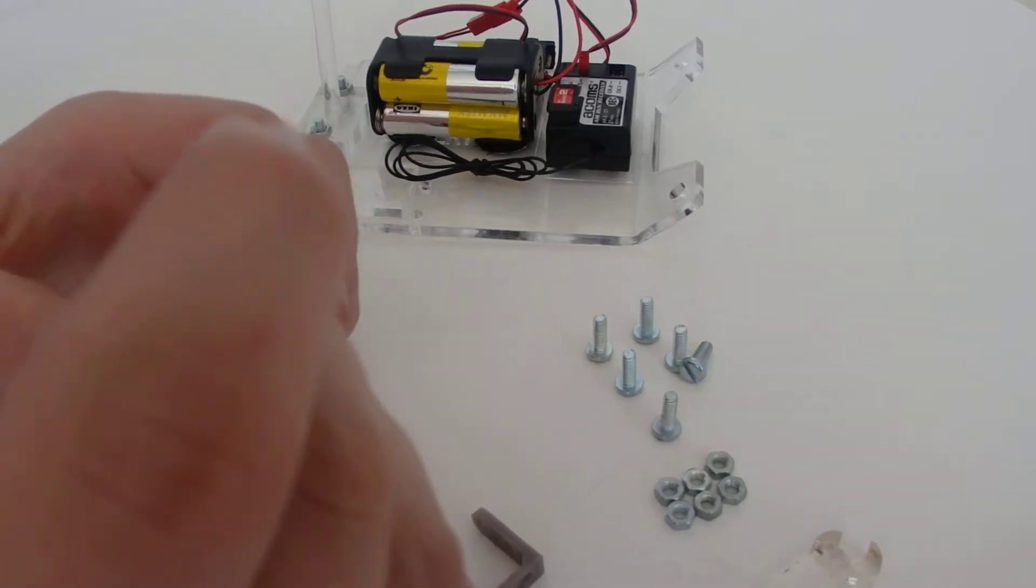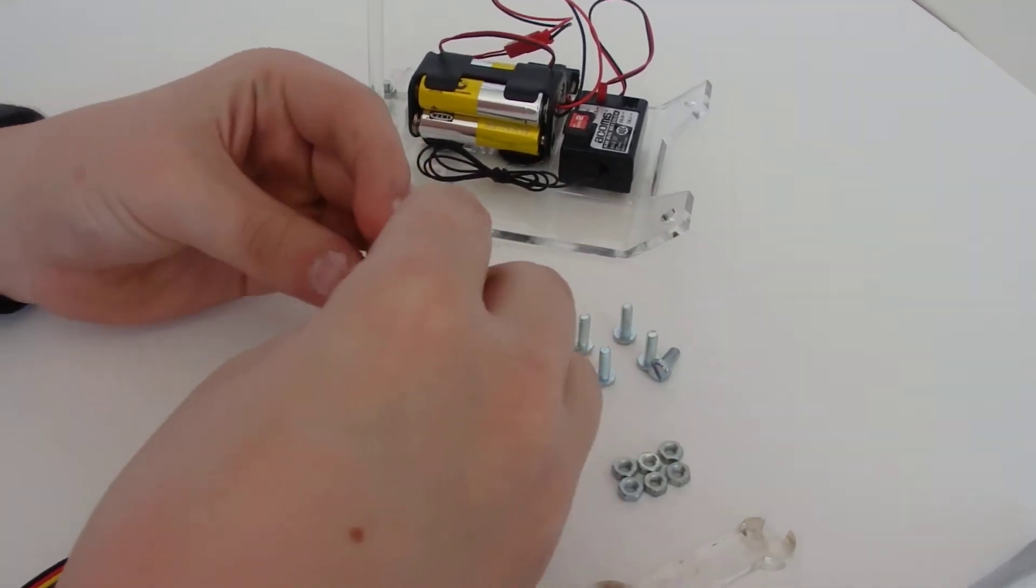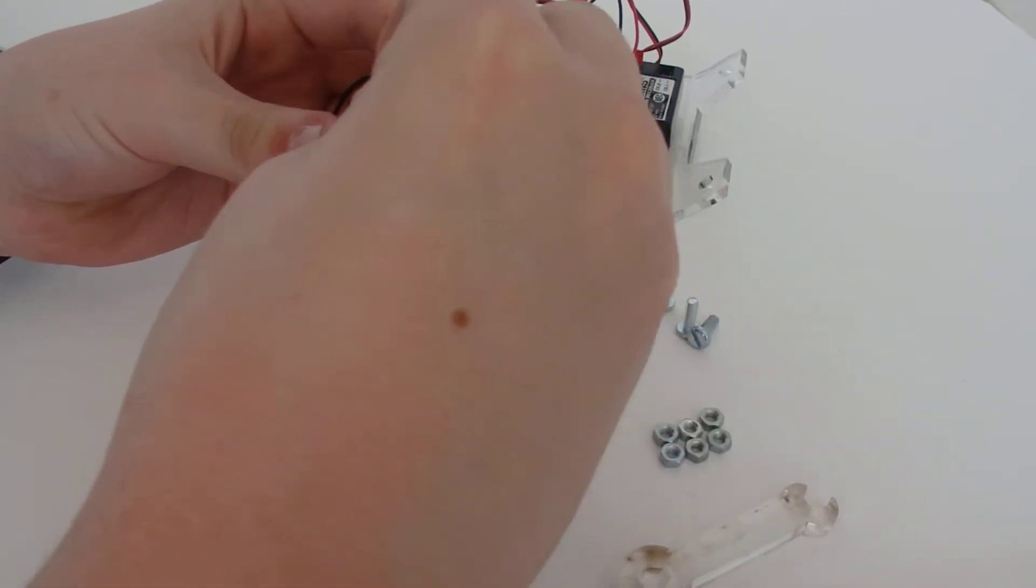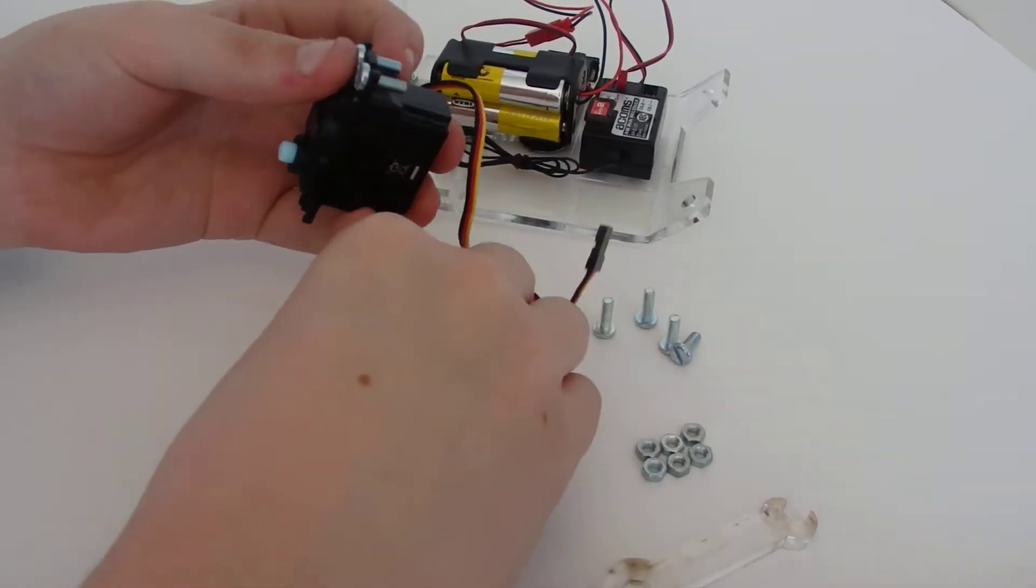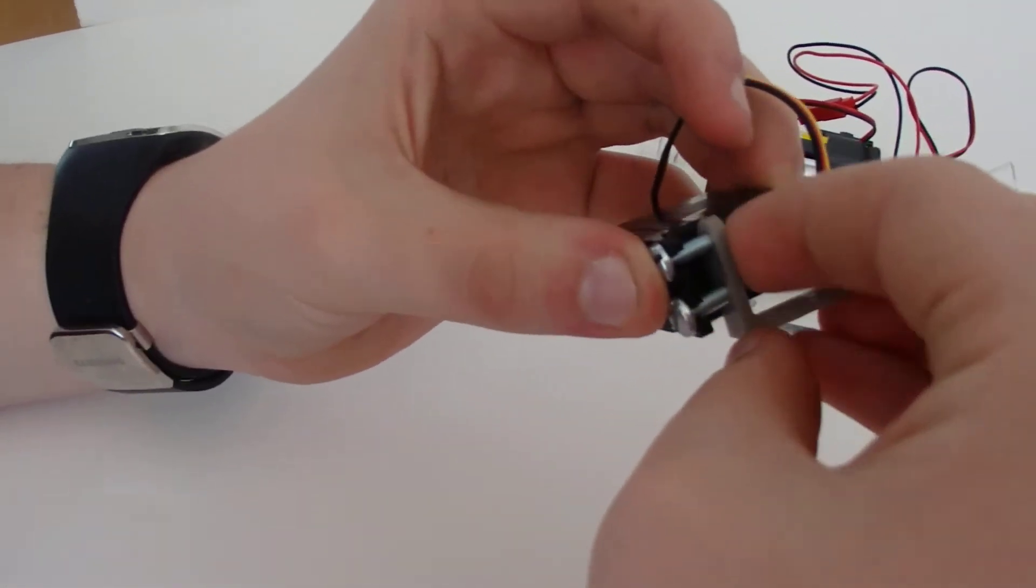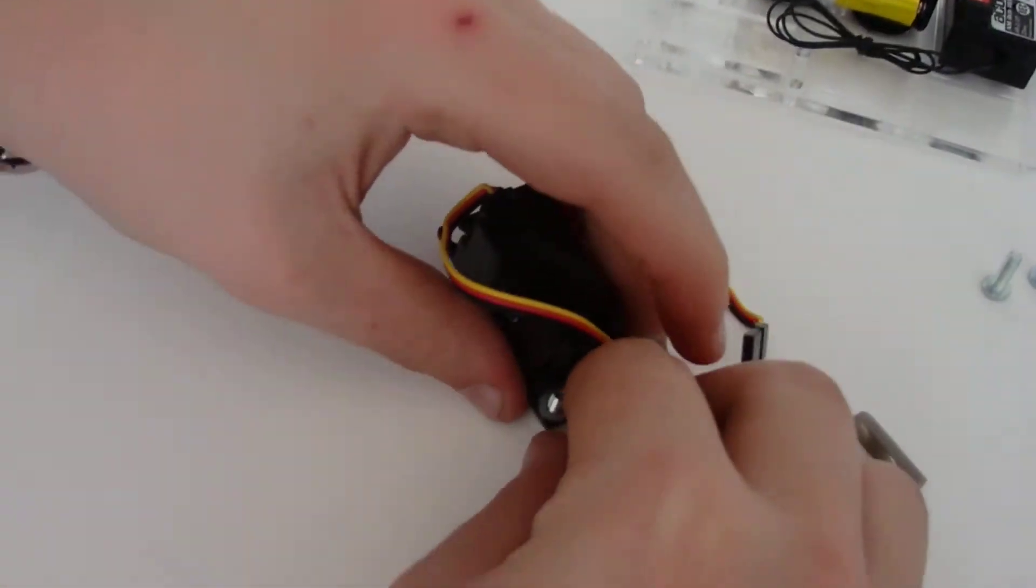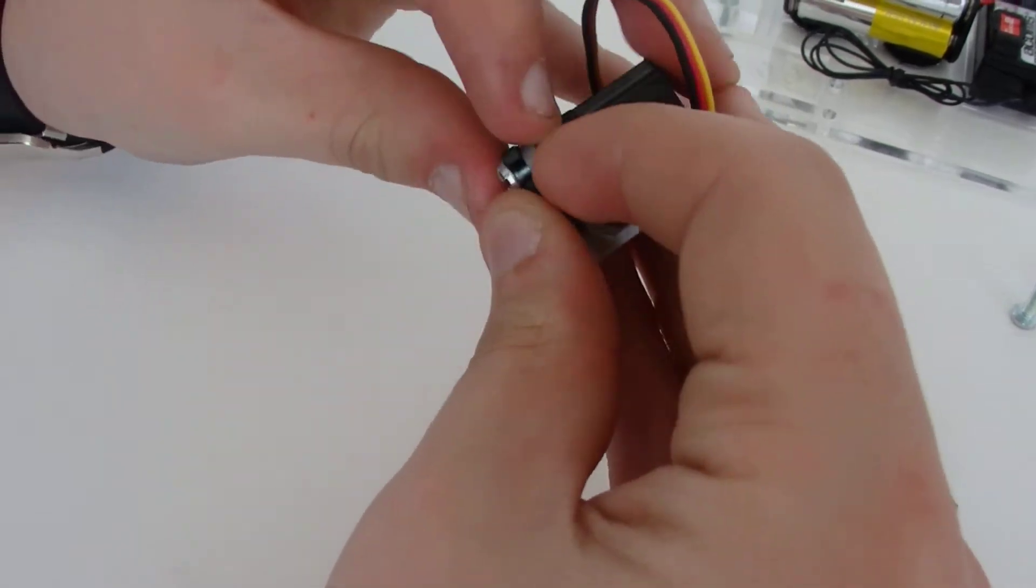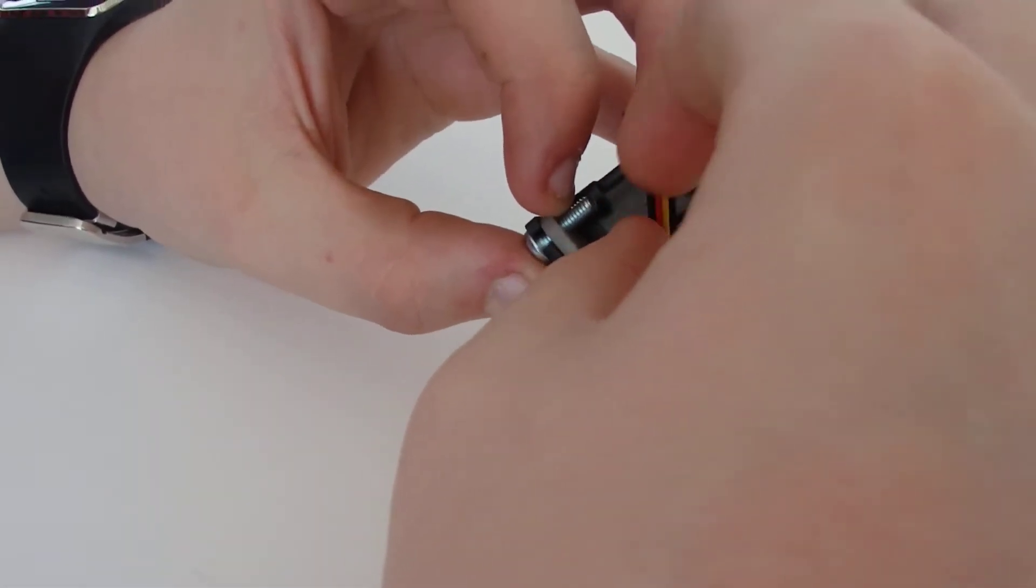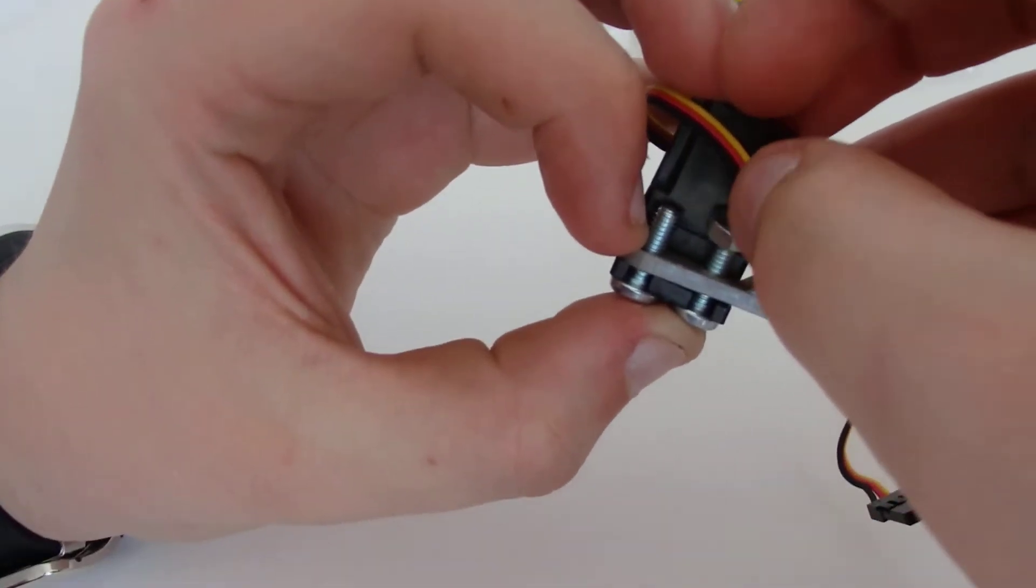So we're going to start with the servo bracket. We're going to put the nut through, we're going to put the bolts through the servo, and then we're going to put the bracket on. We do it this way because it's much easier than fixing the bracket to the base and then having to wrestle with it to fit the servo.